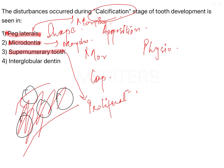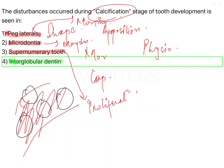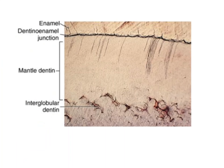That leaves us with the answer: interglobular dentine, which is actually a hypocalcified structure in the dentine. Under the microscope, interglobular dentine appears black in color, indicating a hypocalcified structure where no calcium is present in that region. This is a diagrammatic and microscopic representation — you can see the dentino-enamel junction and within the mantle dentine, the interglobular dentine is present — so that you can identify it in your exam.